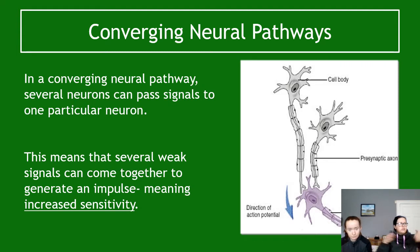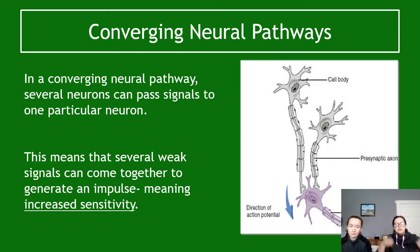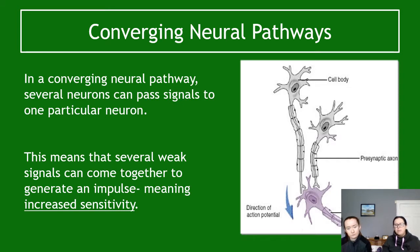A converging neural pathway is when neurons join together to a single point. Several neurons can pass signals to one particular neuron — in the diagram, the two gray neurons converge onto the purple neuron, which then sends the signal onwards. The important thing you need to know is that several weak signals can come together to generate an impulse, and this allows for increased sensitivity.